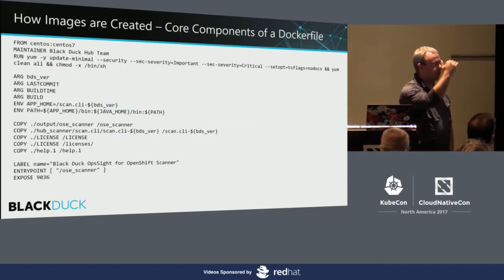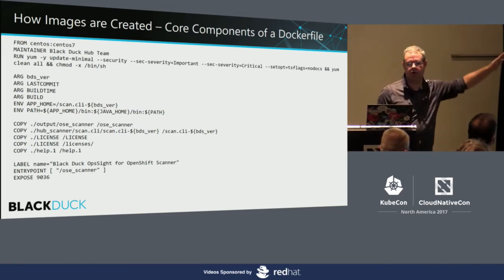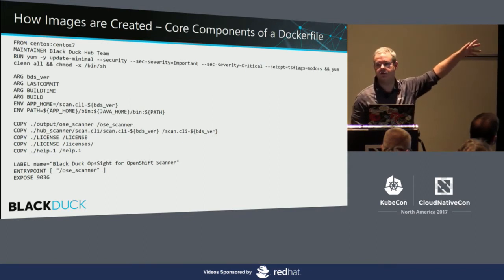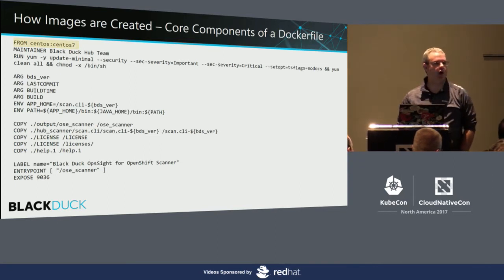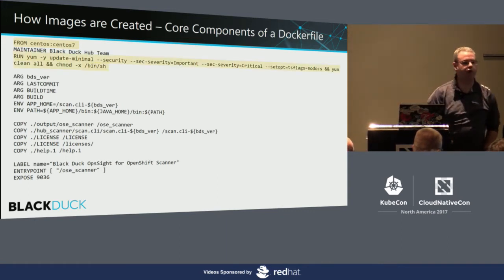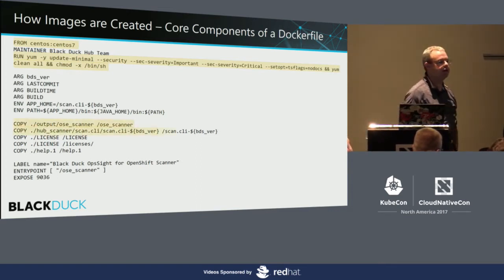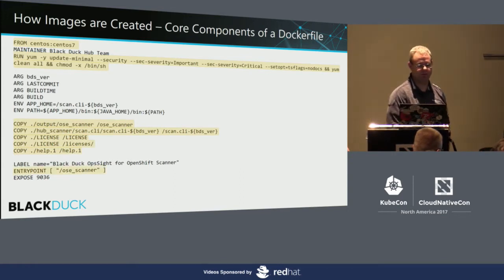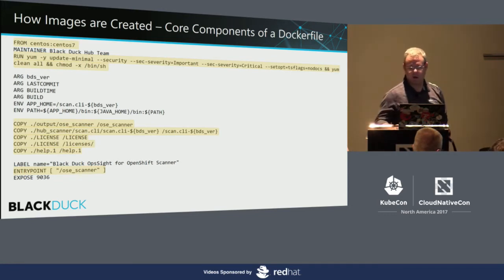This is a Dockerfile, which I'm assuming you've all seen before. This happens to be for one of the container images we ship as part of our Opsite solution. There's the base image — a tag of CentOS 7 out of the CentOS project. A little bit of software hygiene: I'm running an update minimal for all packages in there, then copying in a bunch of stuff relevant to my application, and I've got an entry point that's going to launch this. Your Dockerfiles are going to look very similar — some variation based on what's going on, but a template is formed.